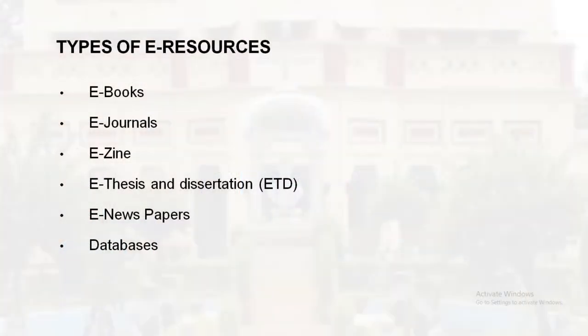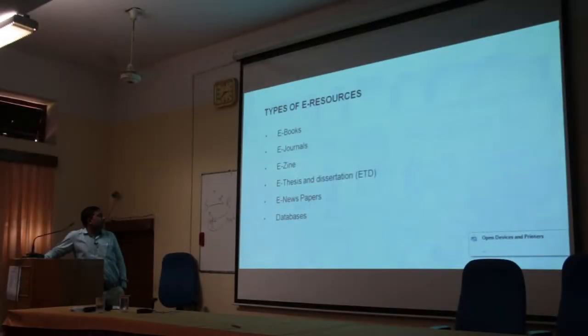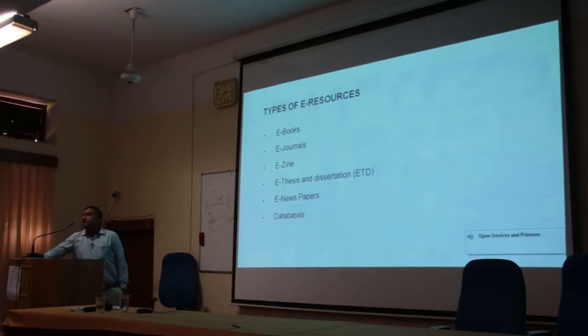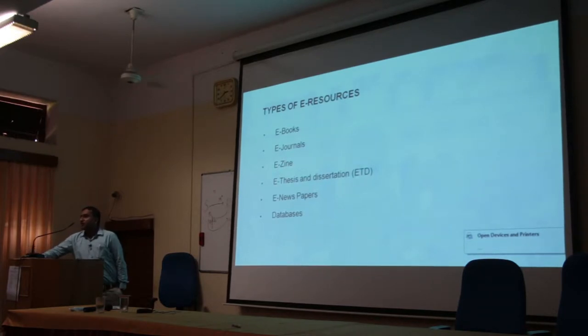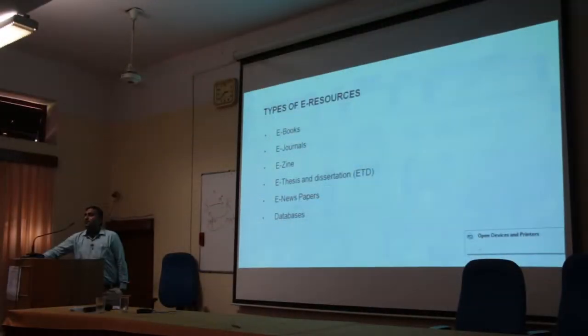Types of e-resources include e-books, e-journals, e-zines — an e-zine is an electronic magazine, in short form we call it e-zine — and e-theses and dissertations (ETD). You may be aware of this since many participants hold PhDs, so you know that theses are stored in institutional repositories or in Shodhganga, where content can be uploaded. After universities collected hard copies, they were scanned and uploaded to Shodhganga through the NMCIT project.